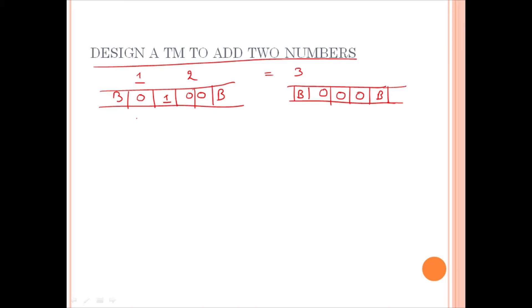In the initial step, you are going to read 1, 0. Replace this 0 by a blank and move towards right cell. So, what we can have, delta, suppose q0 is the initial state, 0 is being read, then you are going to have q1, b, right.